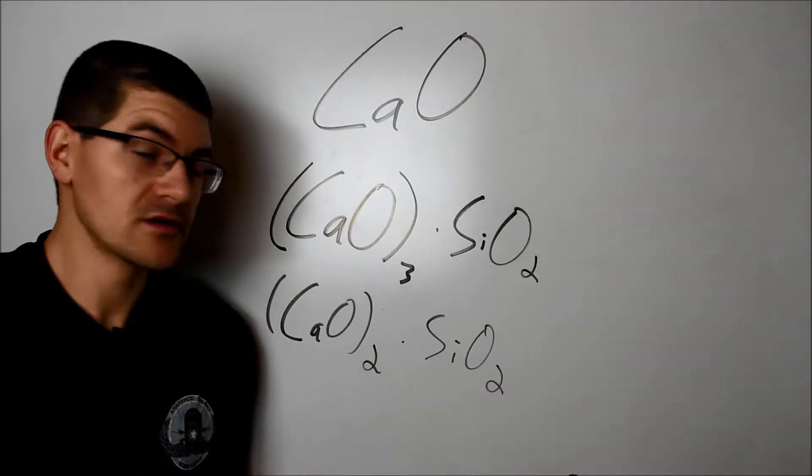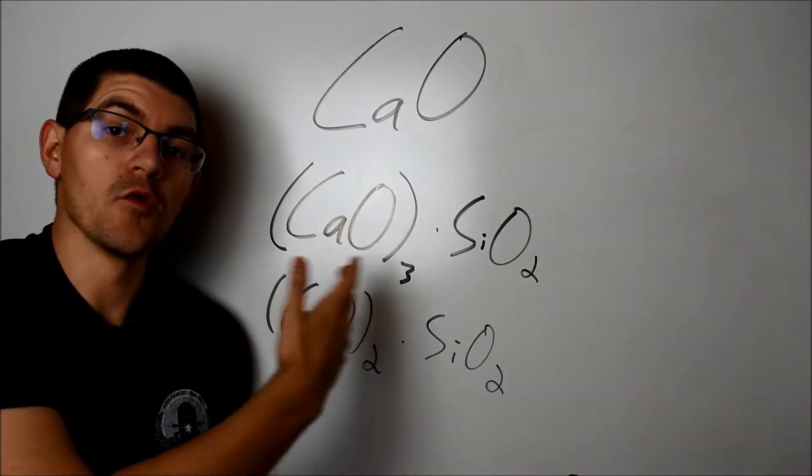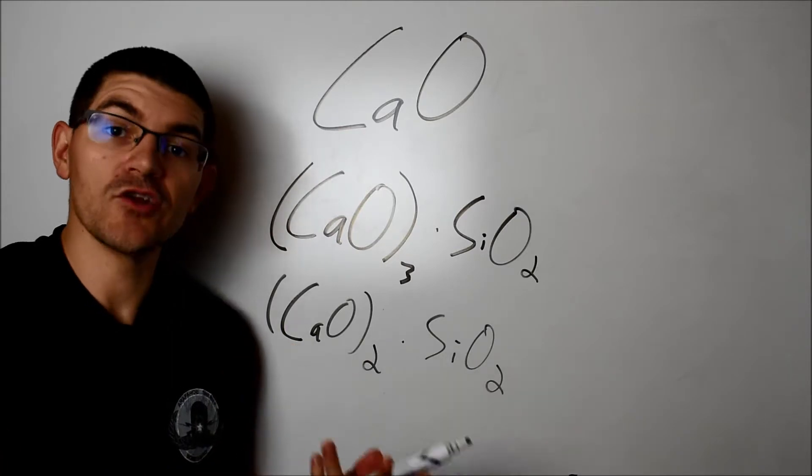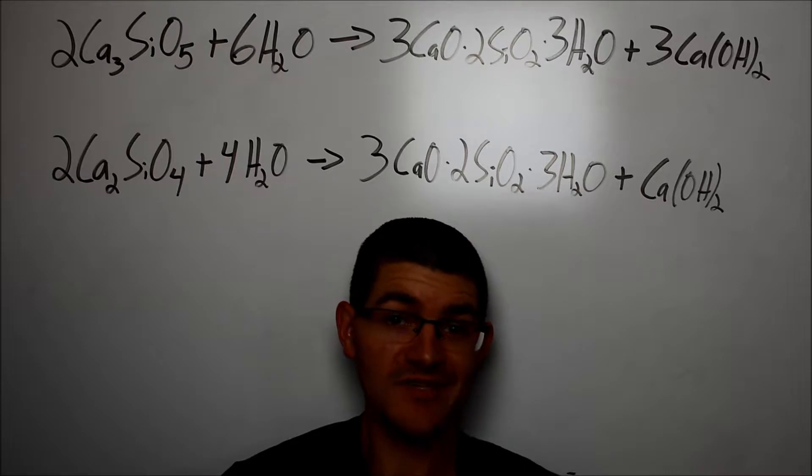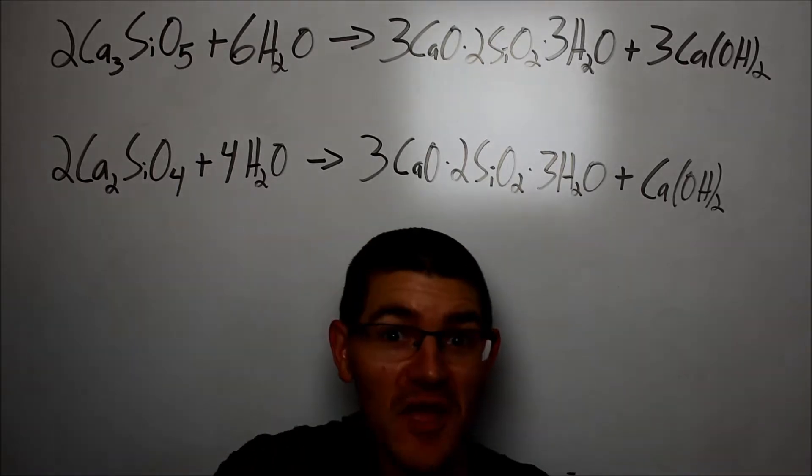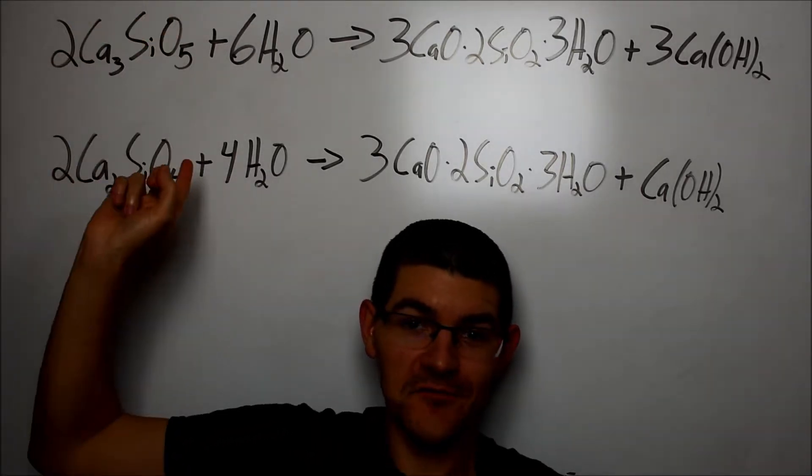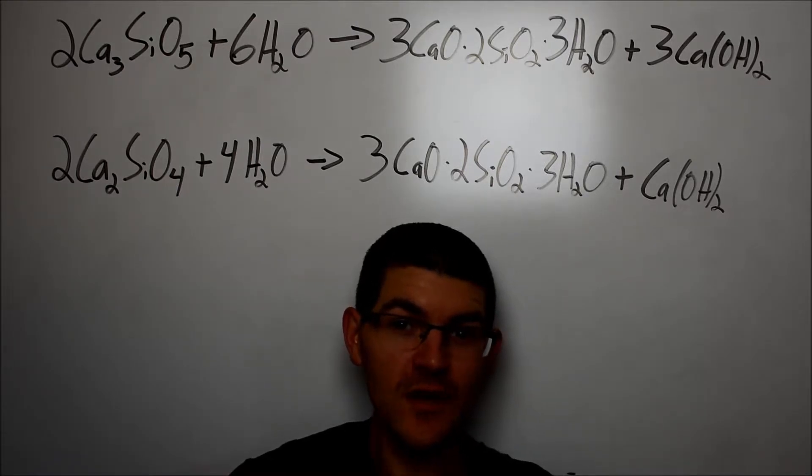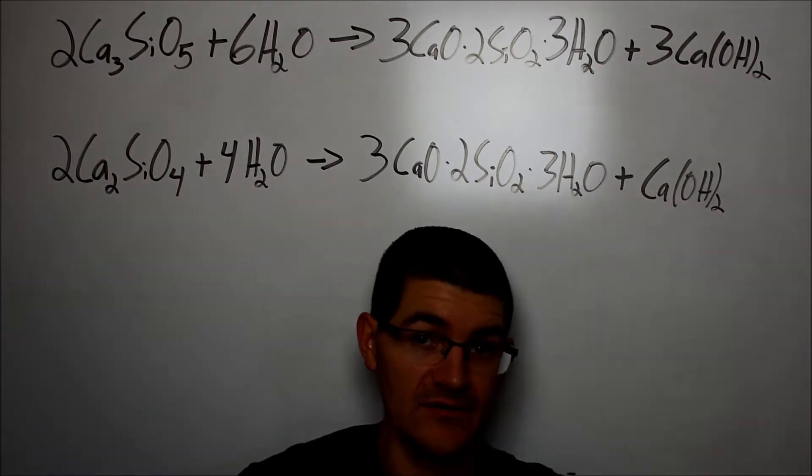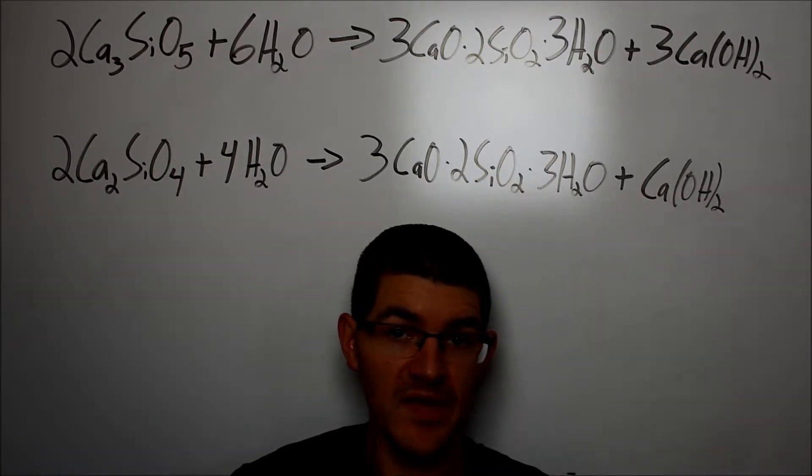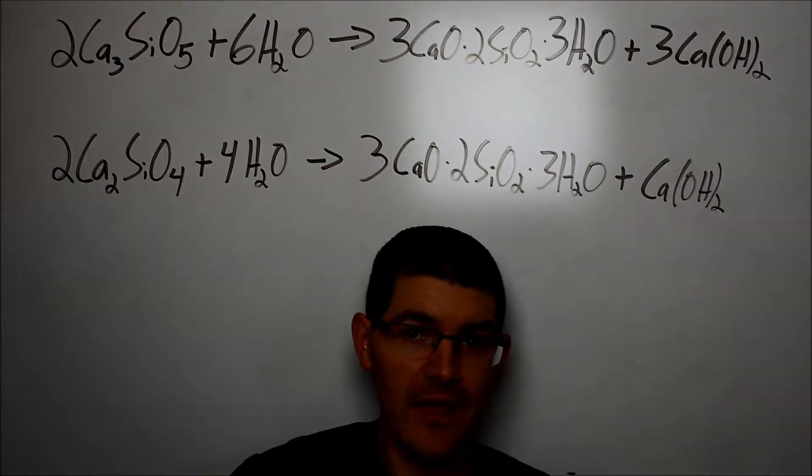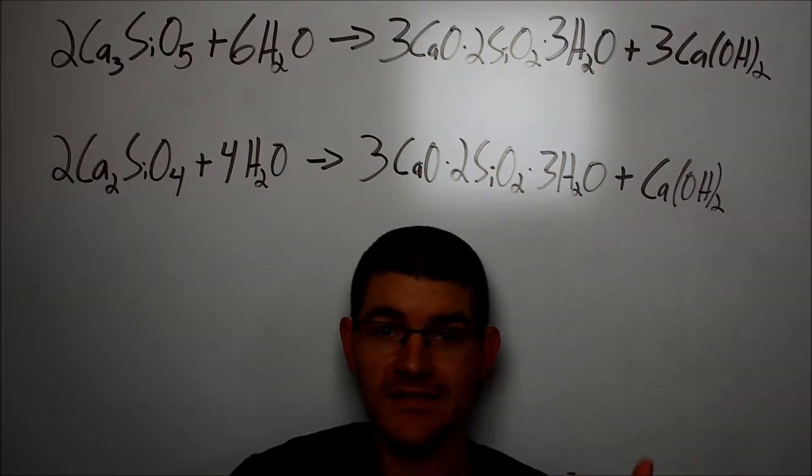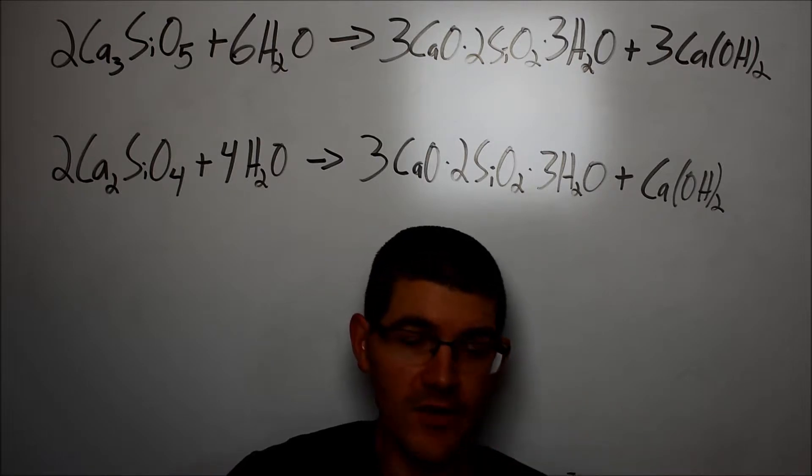So let's look at the reaction between alite and bellite and water to get that hydrated, hard product. Writing these reactions took the entire width of the board, so now I'm sitting on the floor. See how much I care about you? I've rewritten the molecular formulas for the alite and the bellite from how we saw them a few seconds ago, just to make it easier to see the atom economy and follow everything through this reaction setup. The alite on top, the bellite on bottom, we're reacting with water, and we get this hydration product. This triple calcium oxide, double silicon dioxide, triple hydrate.